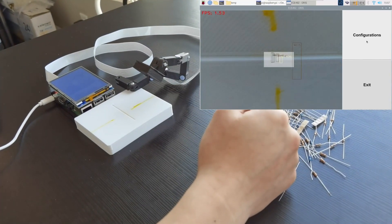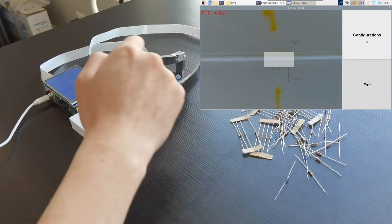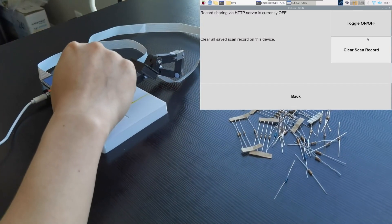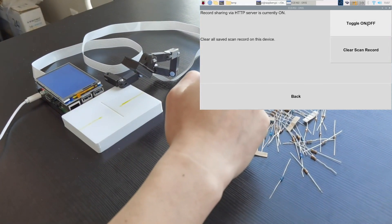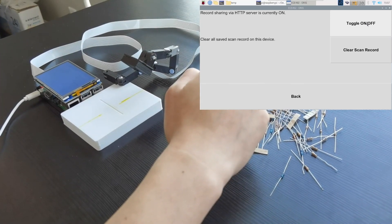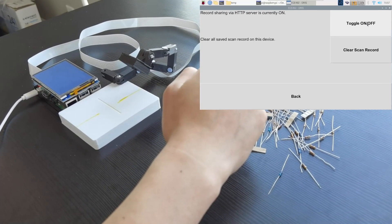Now, I want to retrieve the result from previous successful detection. I will turn on the HTTP server switch in the configuration manual, and then make sure the external device I want to use is connected to the same wireless network as the ORIS. Here, I use my laptop to visit HTTP server.